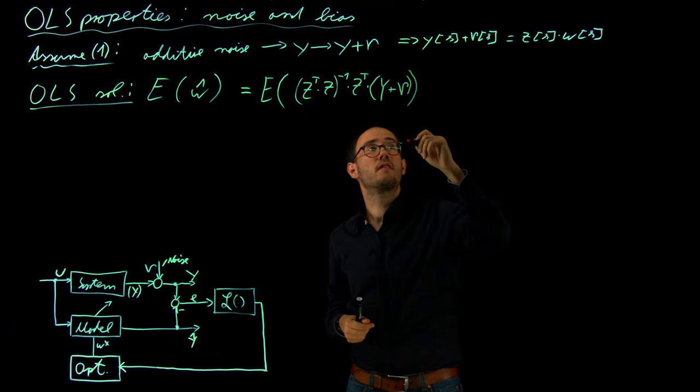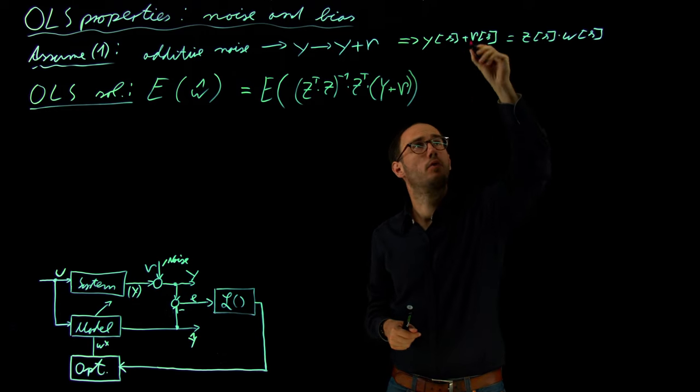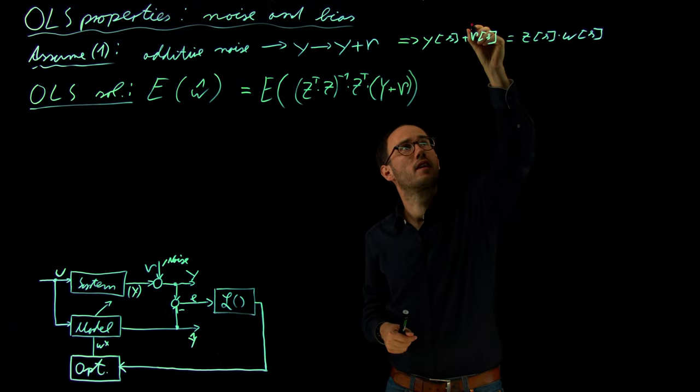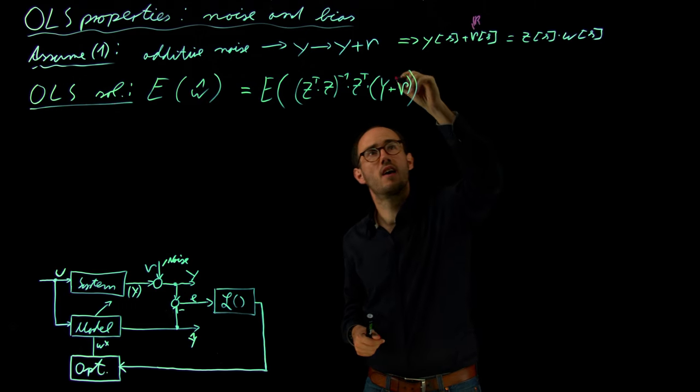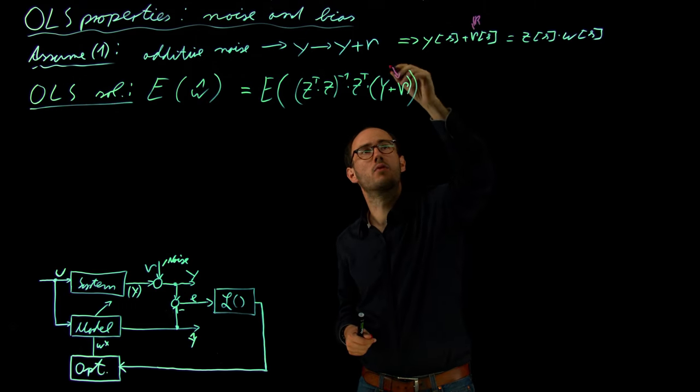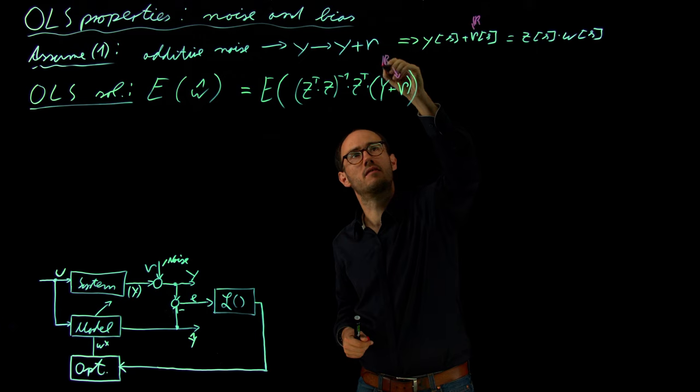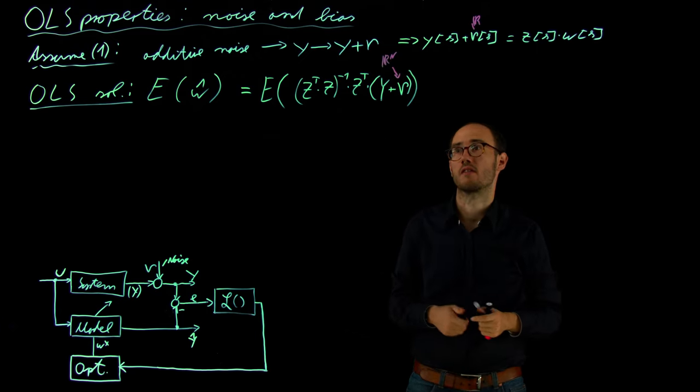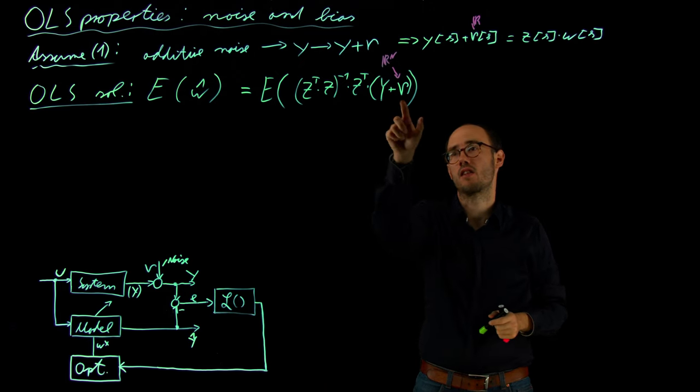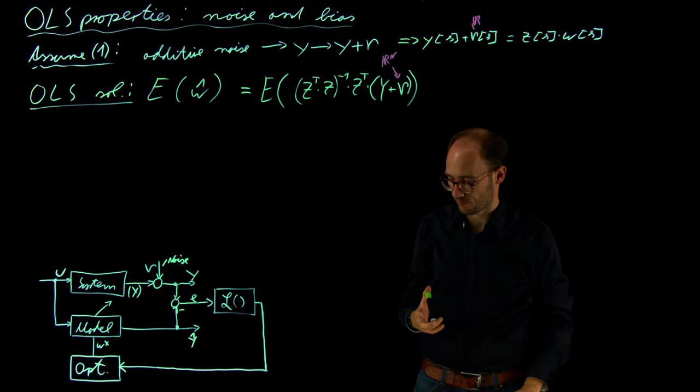Here we have a little bit sloppy notation again, but I think you get the point. Nu here at that point is just the scalar realization of the noise. And here this nu is basically a vectorial realization with up to the n measurement impacts which we have. So here it's a scalar notation and here it's a vectorial notation.